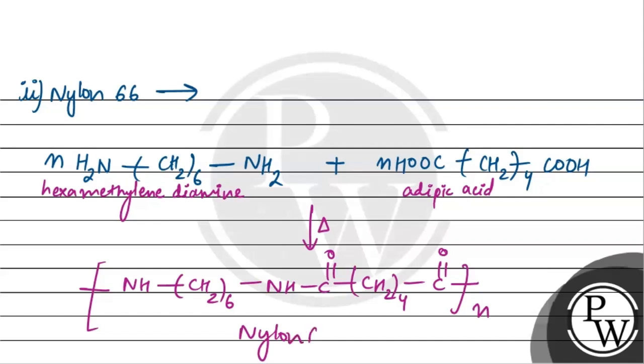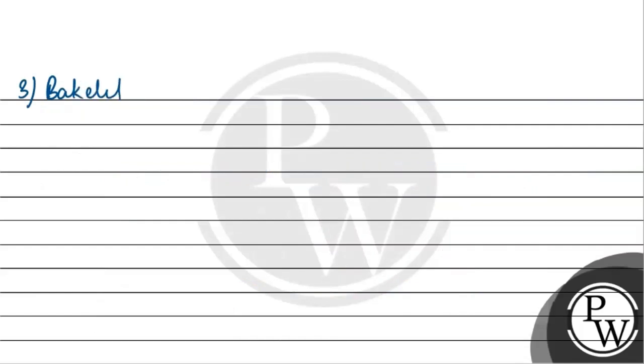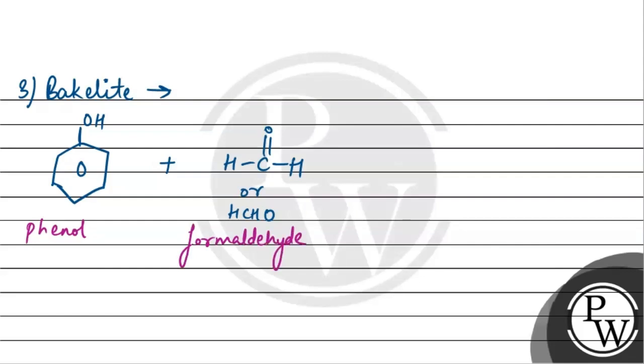Moving to the next polymer, that is Bakelite. Bakelite, we have seen, is made from phenol and formaldehyde. So in these structures, phenol looks like benzene with an OH molecule - this is phenol. And formaldehyde, we have H-C=O-H, or we can write HCHO. This is phenol and this is formaldehyde.